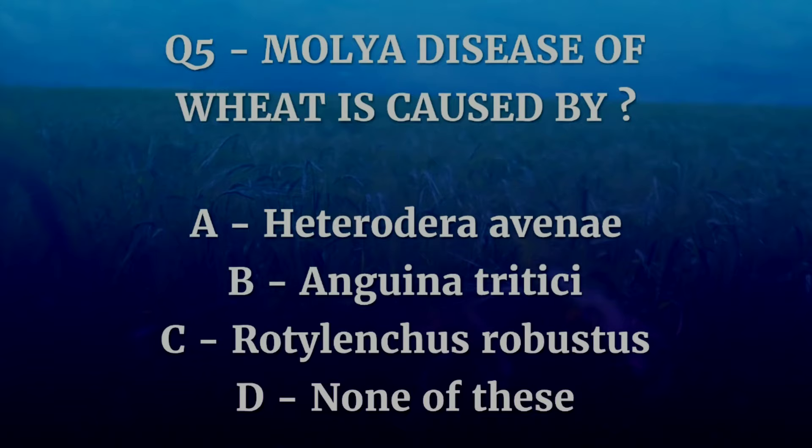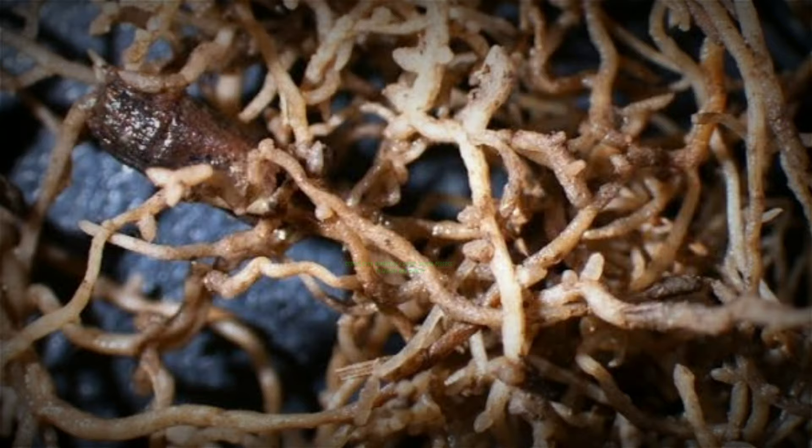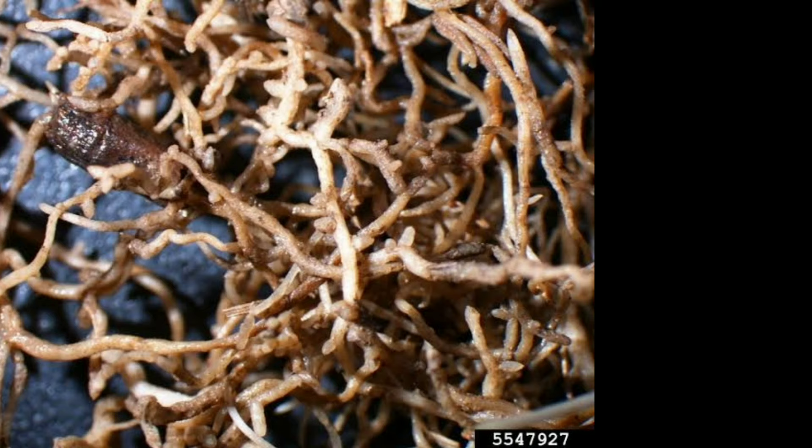Question number five: Molya disease of wheat is caused by which of these? The options are Heterodera avenae, Anguina tritici, Rotylenchulus robustus, or none of these. The correct answer is Heterodera avenae. Cereal cyst nematode causes Molya disease in wheat and barley.